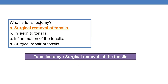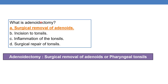What is tonsillectomy? -Ectomy means surgical removal. So tonsillectomy is the surgical removal of the tonsils — option A. What is adenoidectomy? Similarly, -ectomy means surgical removal. Adenoidectomy means the surgical removal of adenoids, also called pharyngeal tonsils. Adenoids are located in the nasopharynx, and their surgical removal is called adenoidectomy.